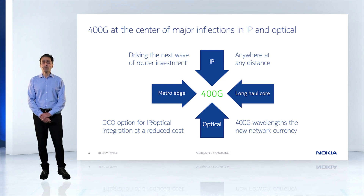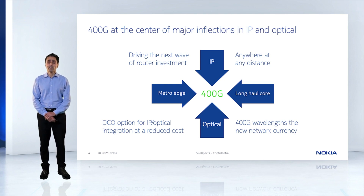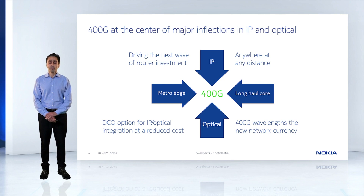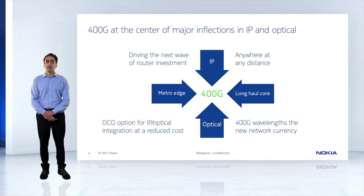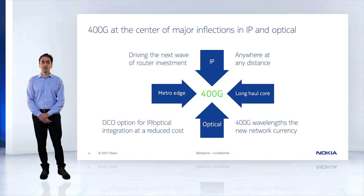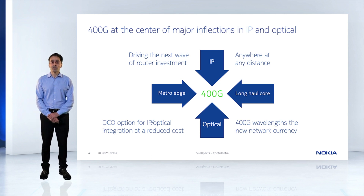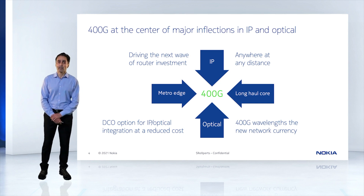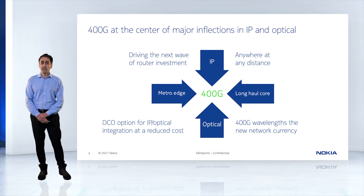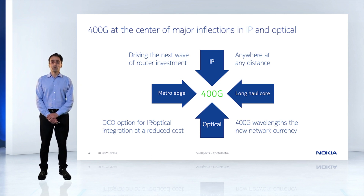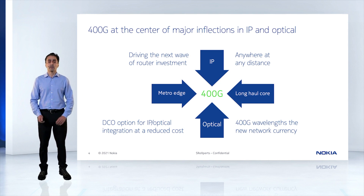400G is becoming the center of the next generation IP optical networking. It is targeted to be used anywhere — in metro, regional, optical, and long-haul — and 400G would be the next currency of networking.